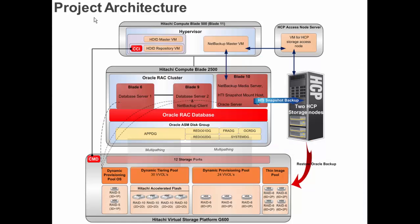This is the architecture of the solution. This solution is based on Hitachi Unified Compute Platform, that is UCP, for Oracle Database. In the Hitachi VSP G600 storage, pools are created for the Operating System and Oracle Database, and are provisioned with multi-pathing to Hitachi Compute Blade 2500. A Hitachi thin image pool is created for HDID snapshots.